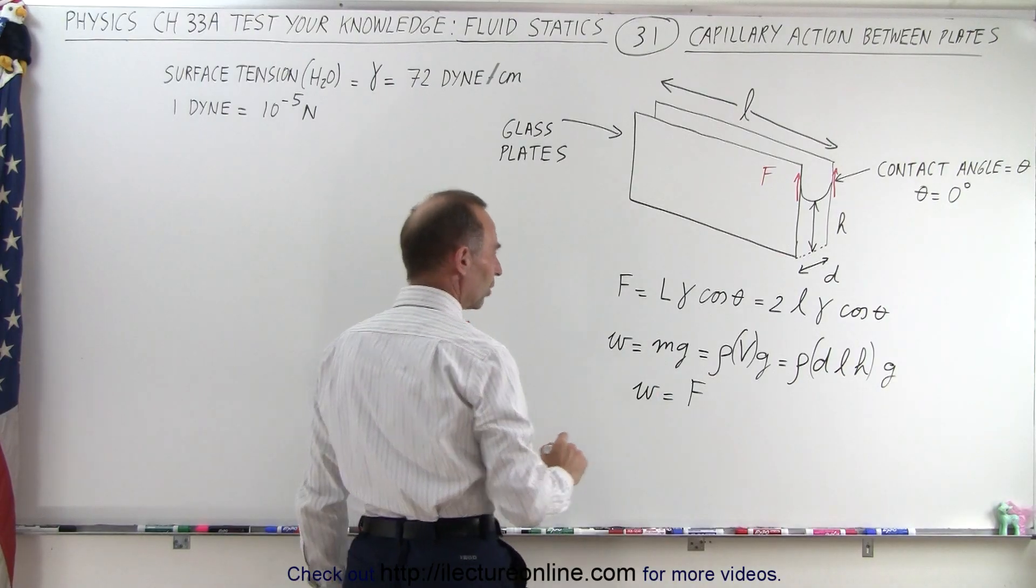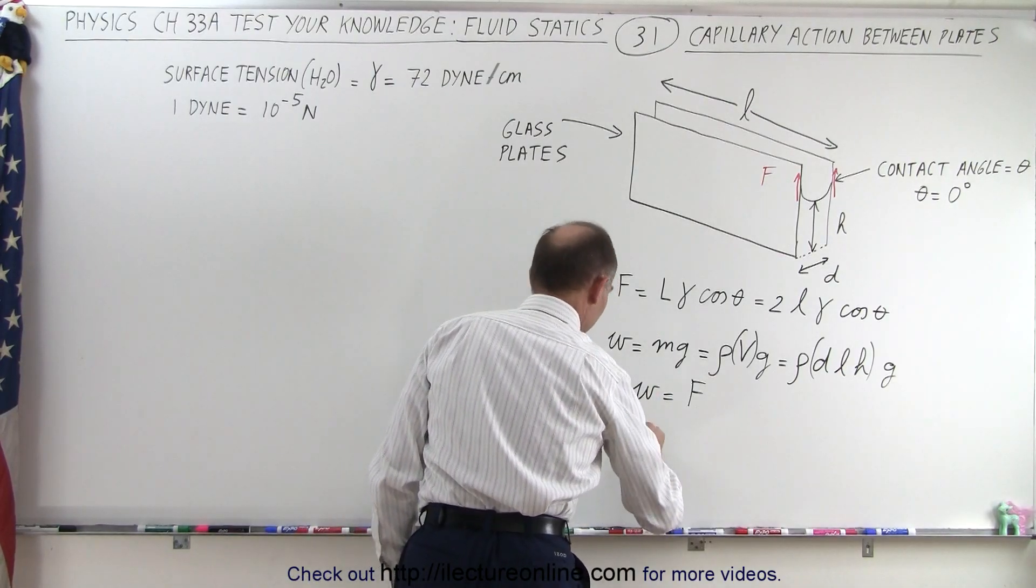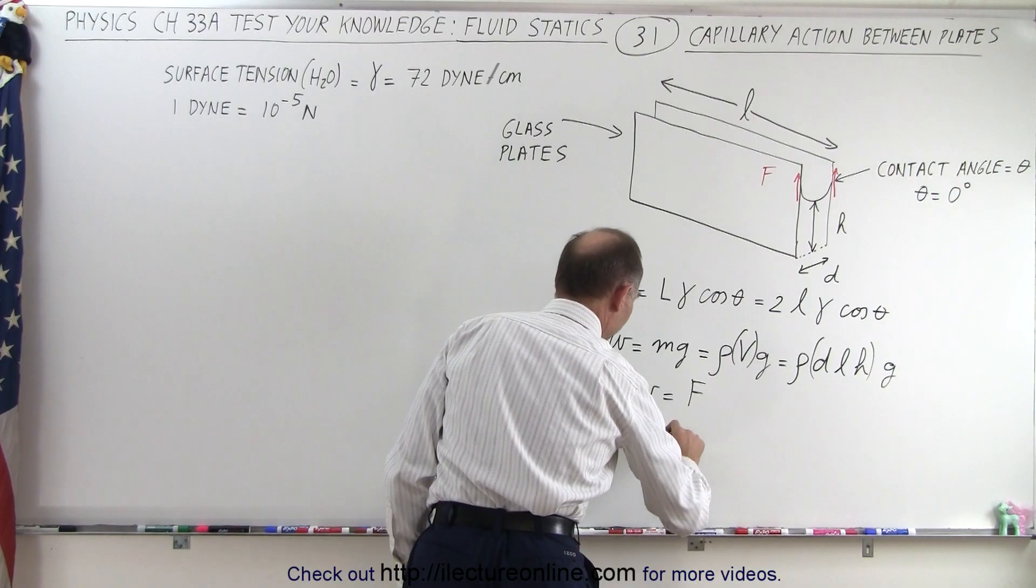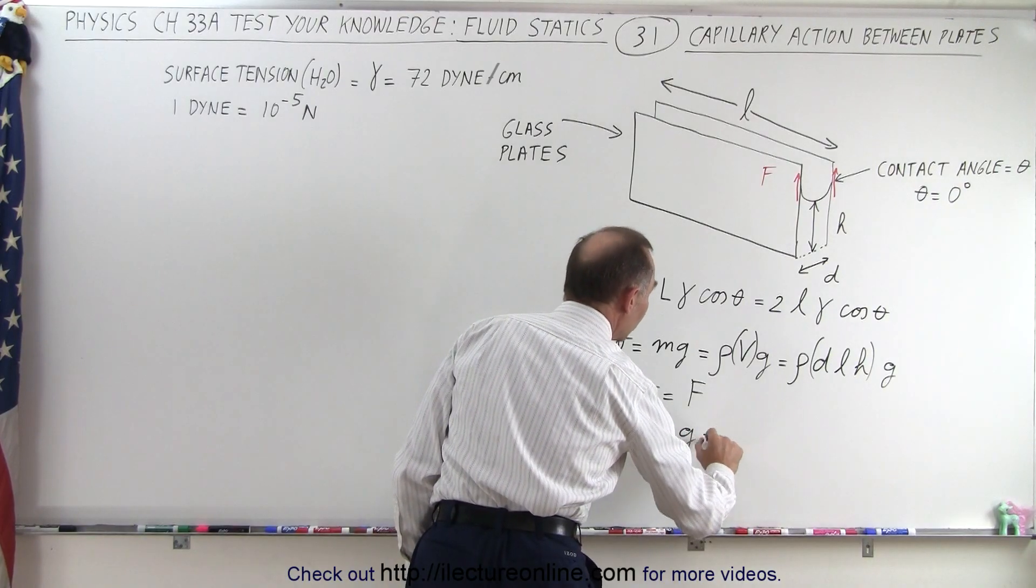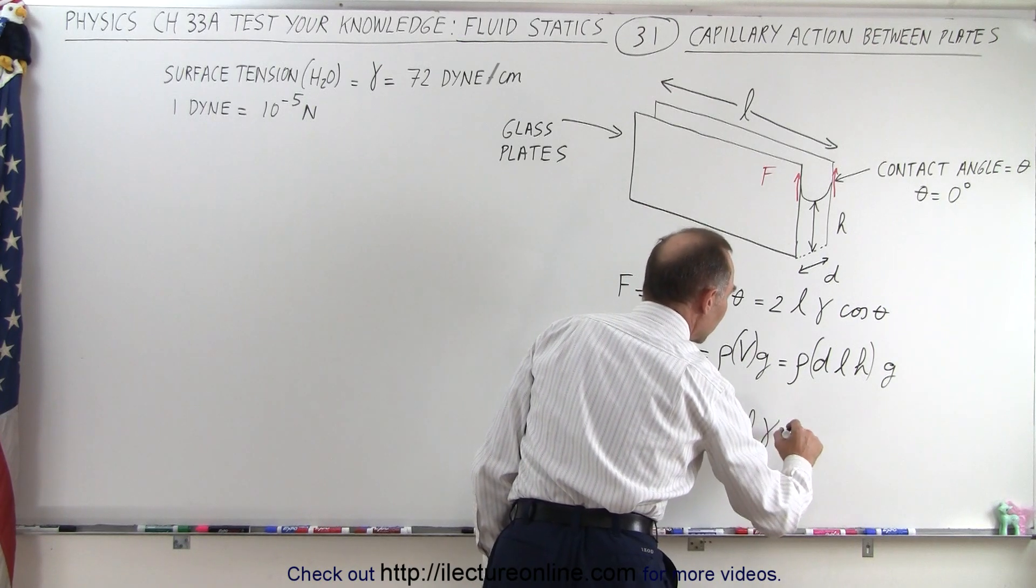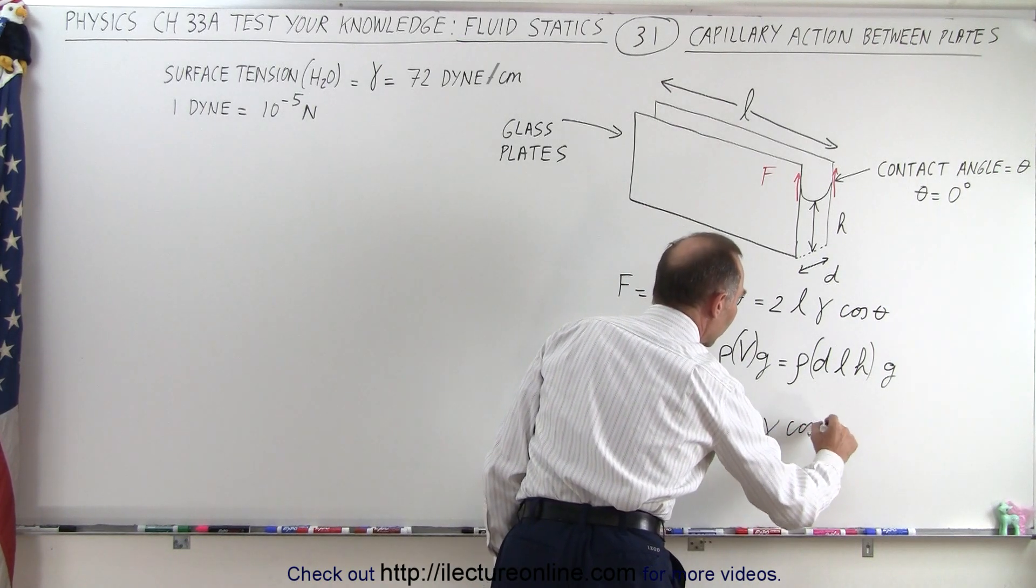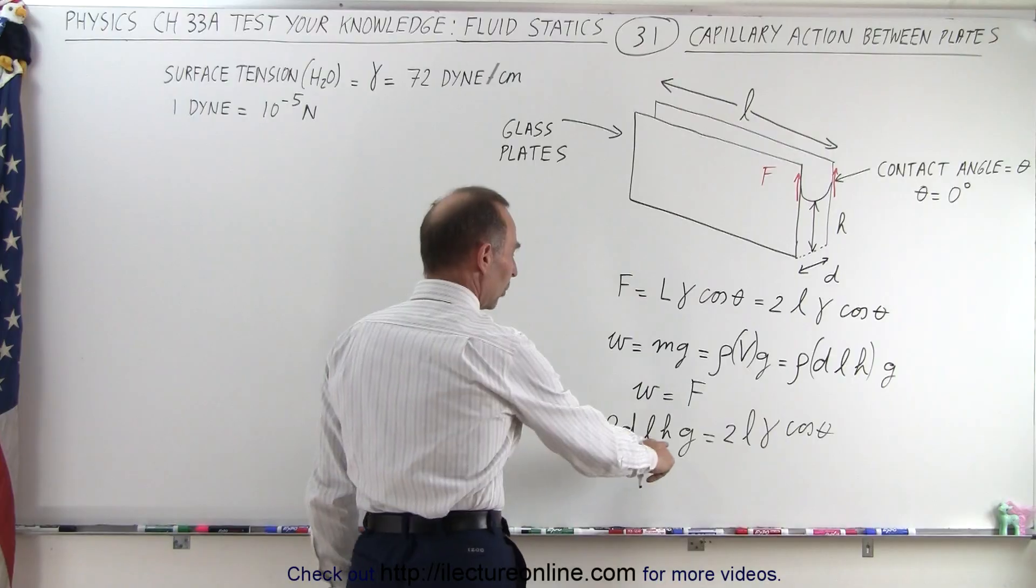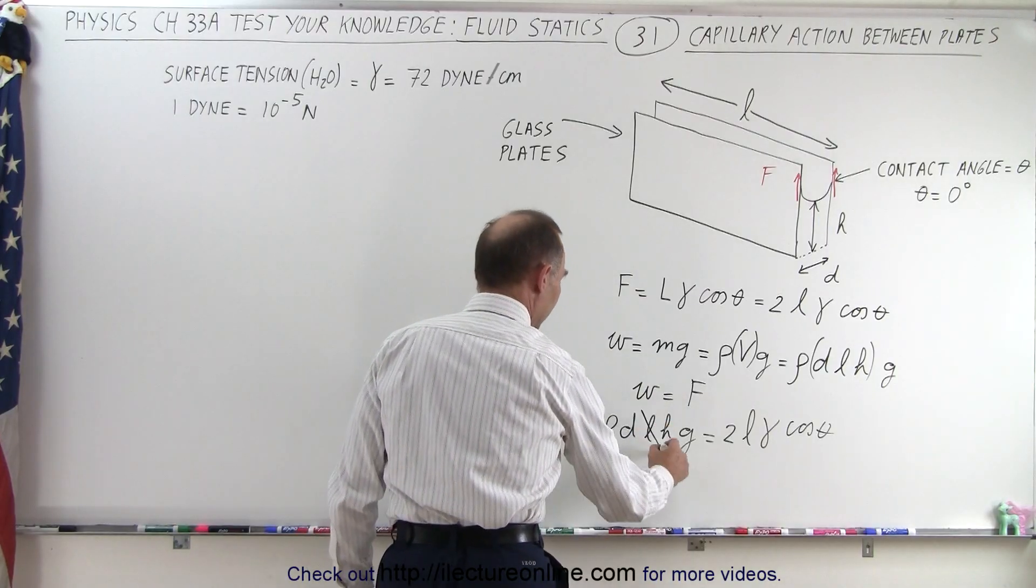So let's put those two equations equal to each other. So we have the density times the distance times L times H times g is equal to 2 times L times the surface tension times the cosine of theta. Since we're looking for H, well first of all, we can cancel the L.